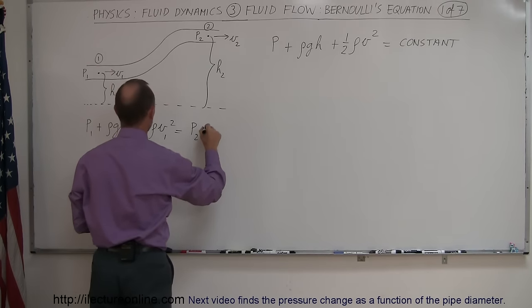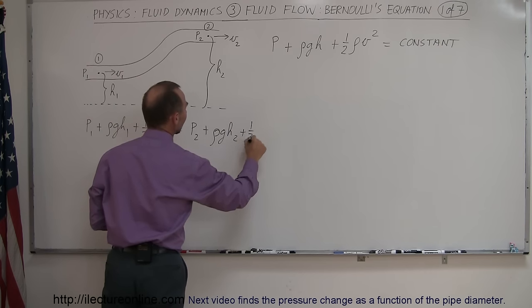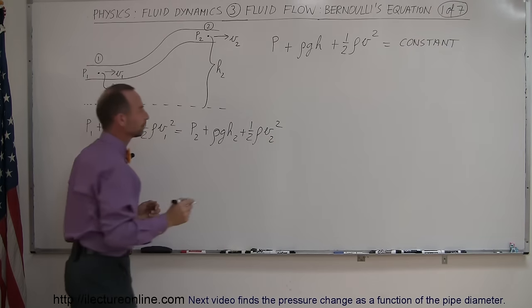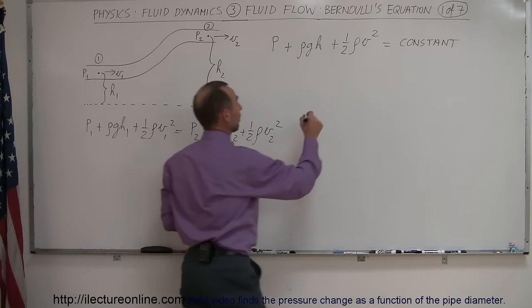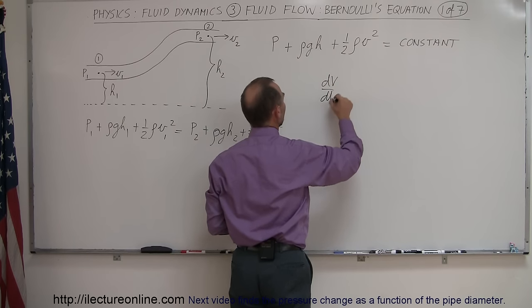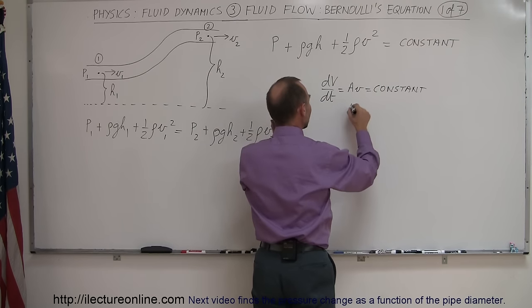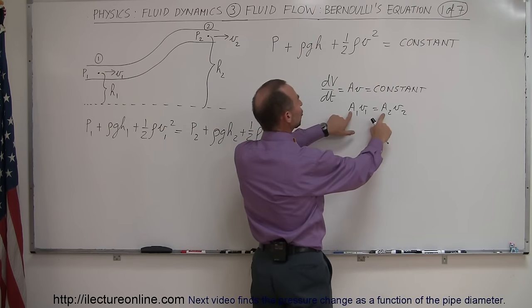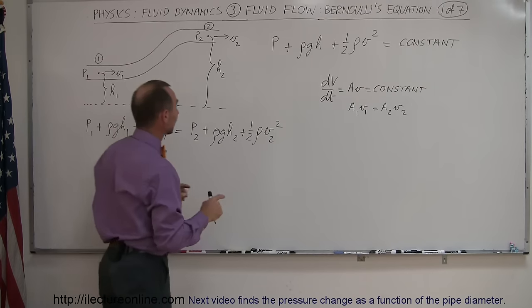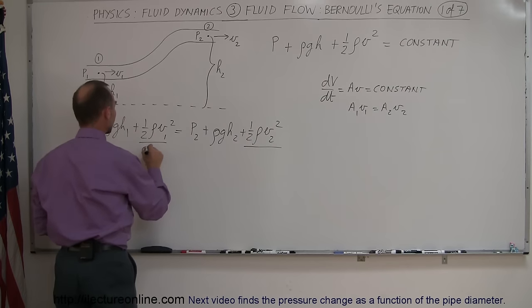Now, in this particular case, since the diameter of the pipe doesn't change, and we know that dv/dt, which is equal to A times v, must also be constant. And therefore, we can say that A1 v1 must equal A2 v2. And if A doesn't change, then v cannot change. So, that shows that the velocity must be the same over here and over here. So, that means this term and this term are constant. They don't change. In this particular example, of course.